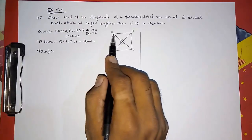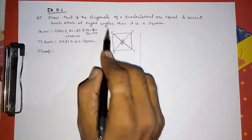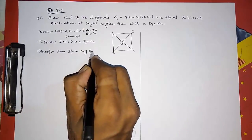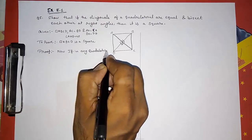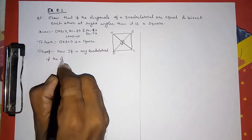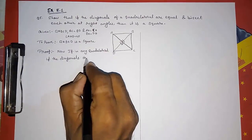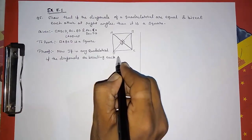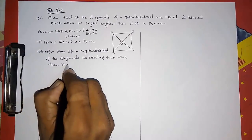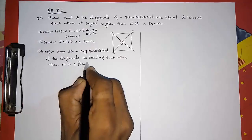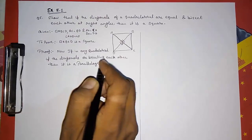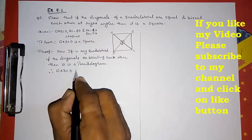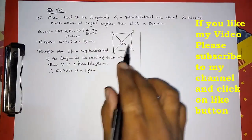The diagonals are equal and bisecting each other at right angles. Now, in any quadrilateral, if the diagonals are bisecting each other, then it is a parallelogram — and we know this from theorems given earlier. Therefore, quadrilateral ABCD is a parallelogram.